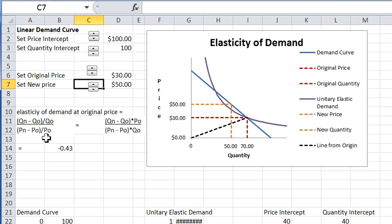So it's a percentage change in quantity divided by the percentage change in price. With a little algebra, that turns out to be p0 over q0, which is the slope of this line from the origin to the curve, times the change in quantity over the change in price.